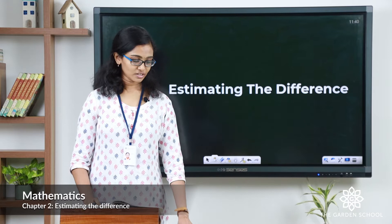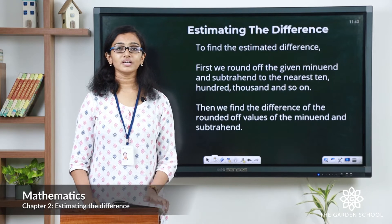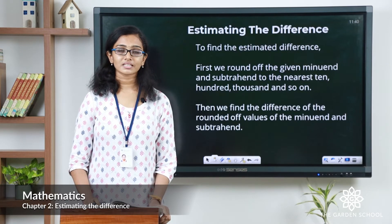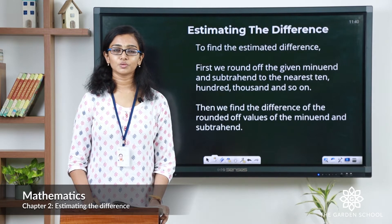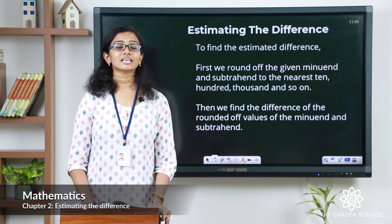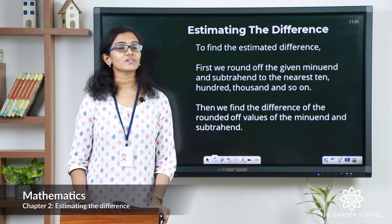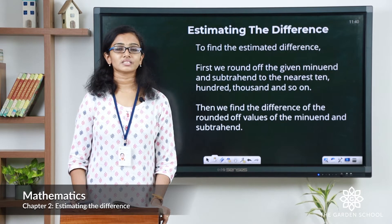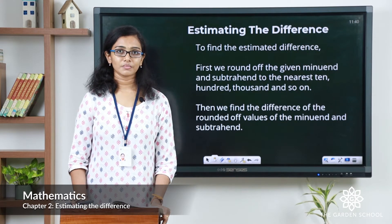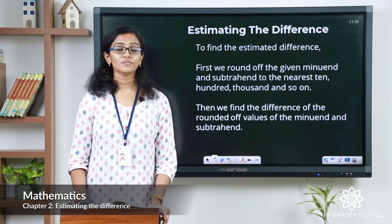In a subtraction, we have the minuend, which is the greater numeral, the subtrahend, the smaller numeral, and the result is called the difference. So to find out the estimated difference, what do you have to do?